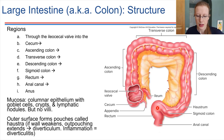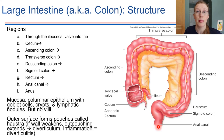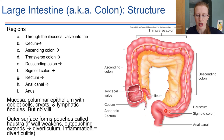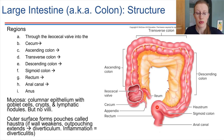The sigmoid colon leads to the rectum, and then the anus is the opening where the feces leave the body. All of this put together is what we refer to as the large intestine, also known as the colon — the colon is referring to the same thing.